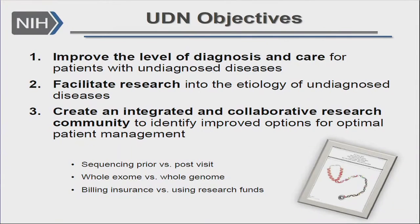Just to remind you, the UDN objectives are to improve the level of diagnosis and care, facilitate research into the etiology of undiagnosed disease, and to create an integrated and collaborative research community identifying other options. A couple of options discussed previously include sequencing prior versus after, whole exome versus whole genome, and billing insurance versus using research dollars.